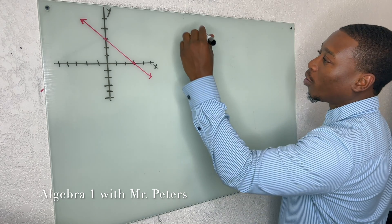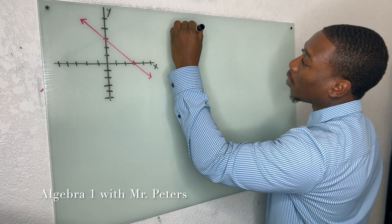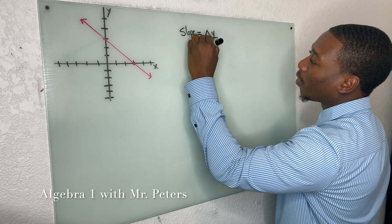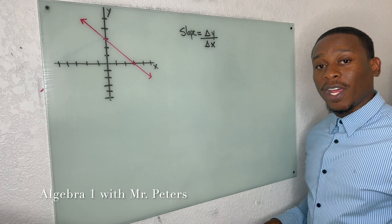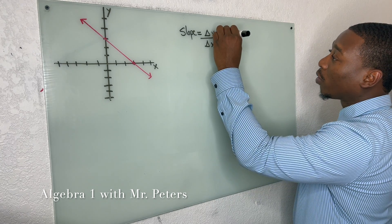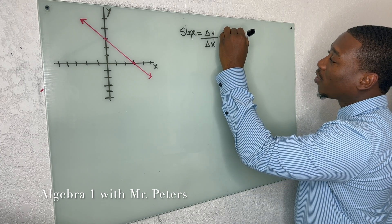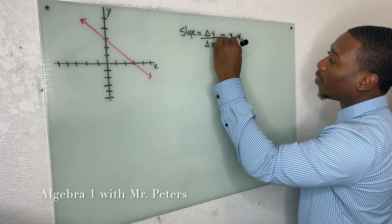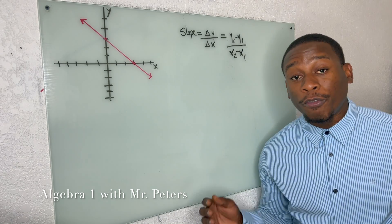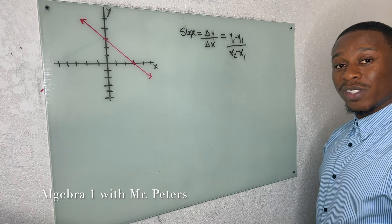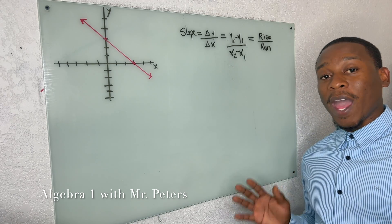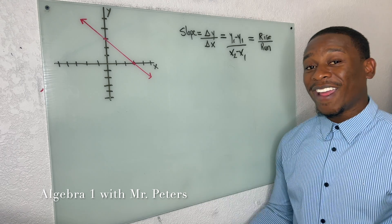Starting off, we need to know the formula for slope. Typically, this is the formula we start off with: the change in y divided by the change in x. This breaks down into y2 minus y1 divided by x2 minus x1, also known as the slope formula. A lot of students refer to this as rise over run. These are just some basics we have to understand if we want to answer slope correctly.